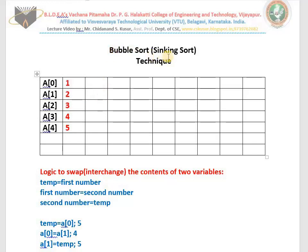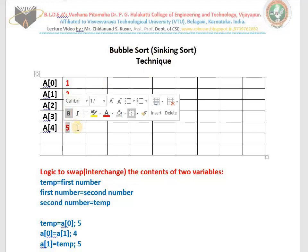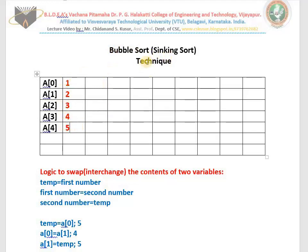This technique is called bubble sort technique. Every time the largest value is blocked at the bottom, and the lowest value moves up. In water, a bubble moves up because of lower weight; a pebble sinks because of higher weight. Because of this, it is called bubble sort technique. This technique is also called sinking sort, because the largest value moves down while the lowest value comes up.